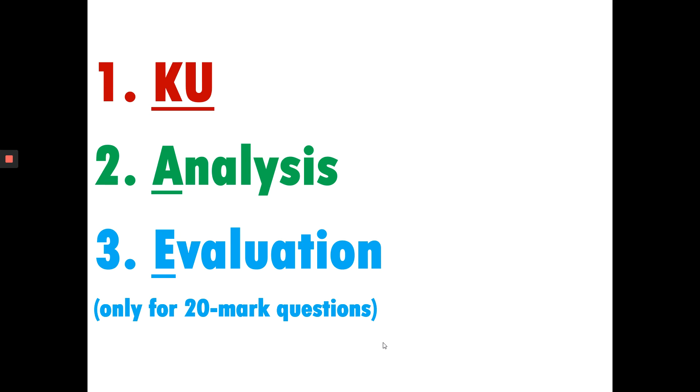The skills that we look at is KU which stands for knowledge and understanding, analysis, I'm going to tell about that and evaluation. Now the evaluation skill is only for the 20 markers. So for the 10 markers and you've got two of them in the whole of the exam, the skills are KU and analysis and then for the 20 marker and you've got three of them, one for each unit, it's KU analysis and evaluation.